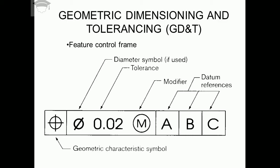Next comes the modifier. Modifier is the maximum material condition or the least material condition. If we write capital M inside the circle, it means maximum material condition. If we write capital L inside the circle, it means least material condition.